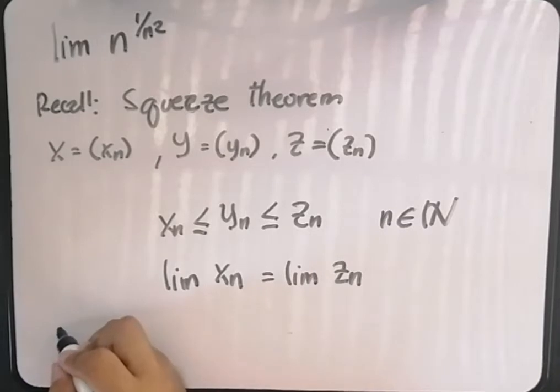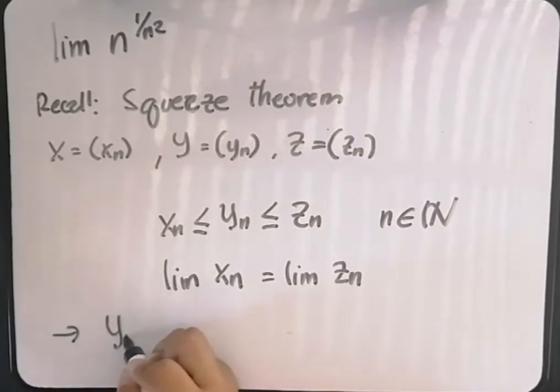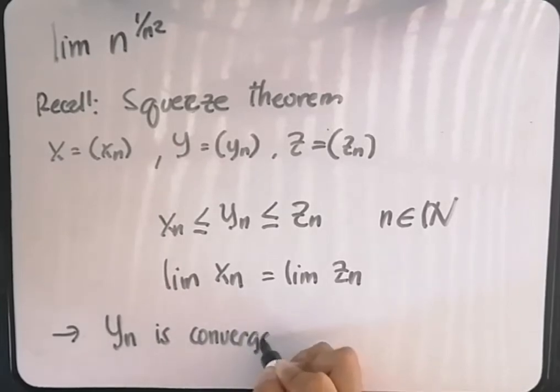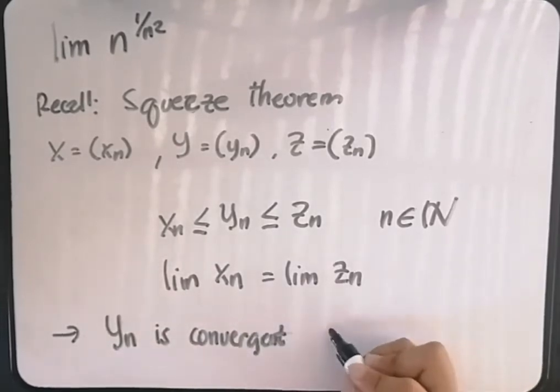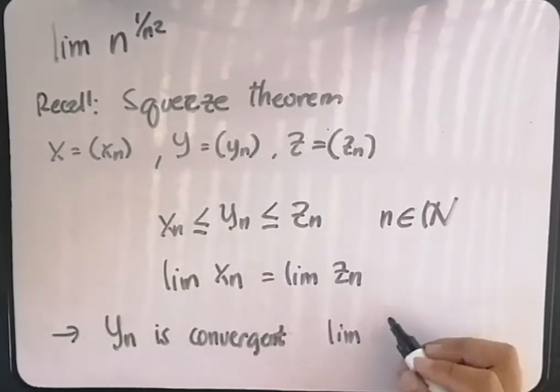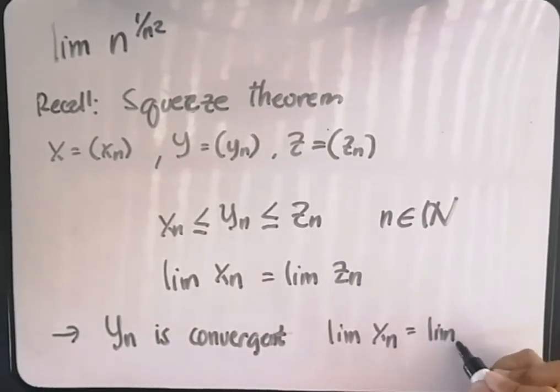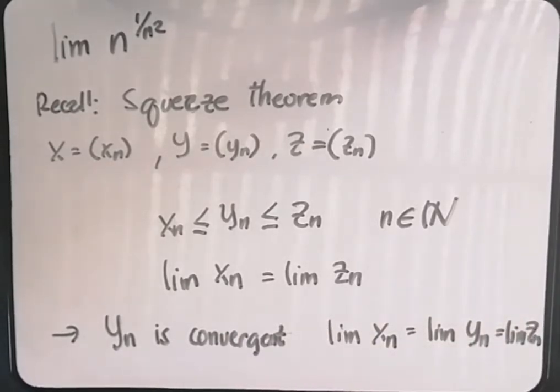This means that y sub n is convergent and the limit of x sub n is equal to the limit of y sub n is equal to the limit of z sub n.